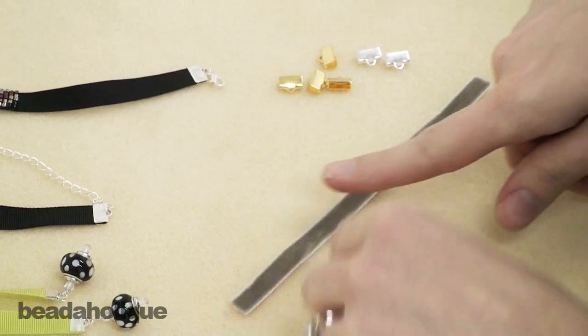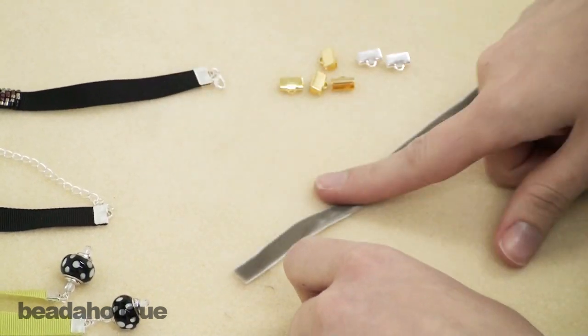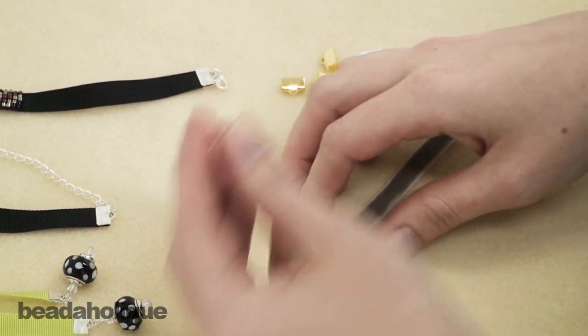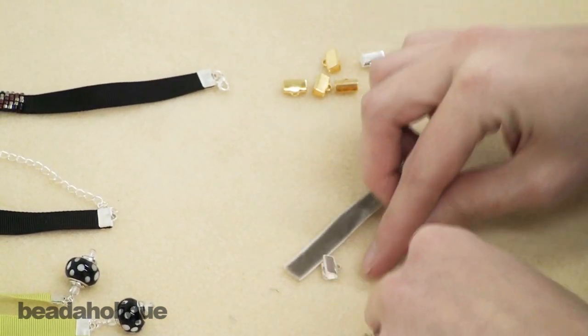Most of the ribbon that we sell here at Beadaholique.com is three-eighths of an inch wide, our grosgrain and our velvet. So we carry three-eighths inch ribbon crimps to match the ribbons.